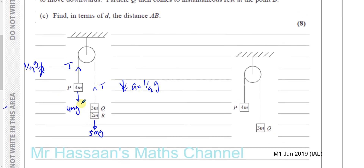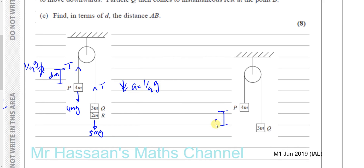So basically in the beginning these particles move up a certain distance D meters. Then at that point R separates from Q. So we're going to take this as situation 2 after R separates, and situation 1 before R separates. If P moved up D meters then Q must have dropped D meters.